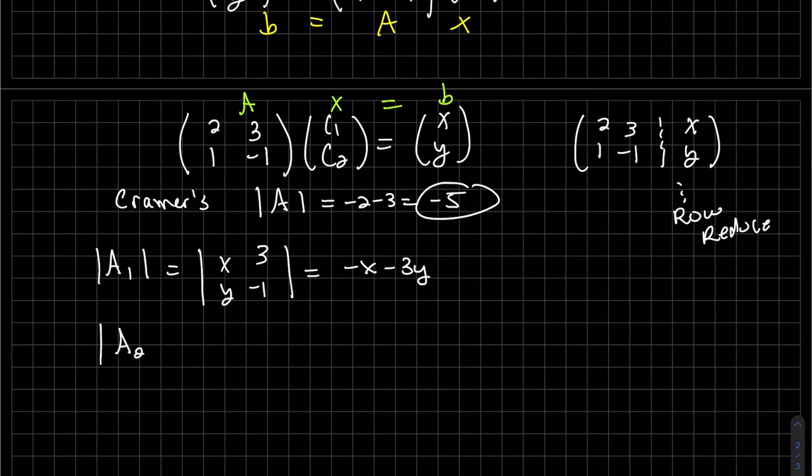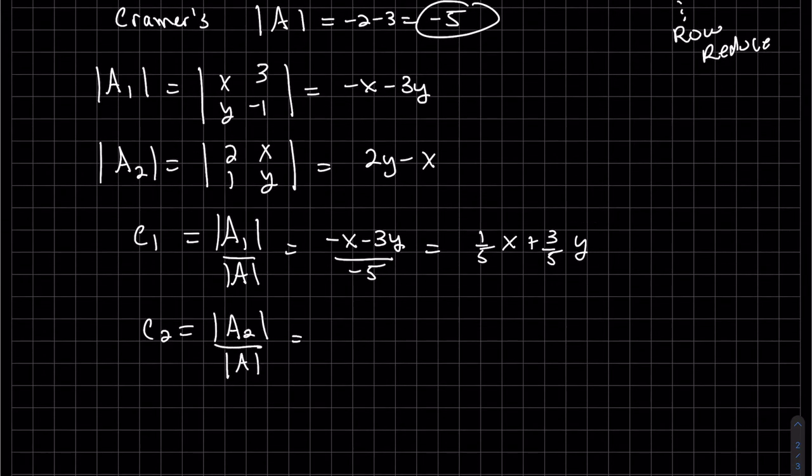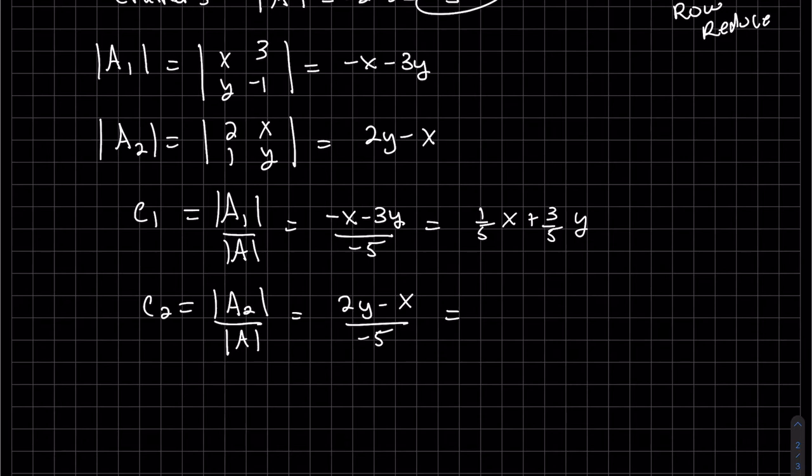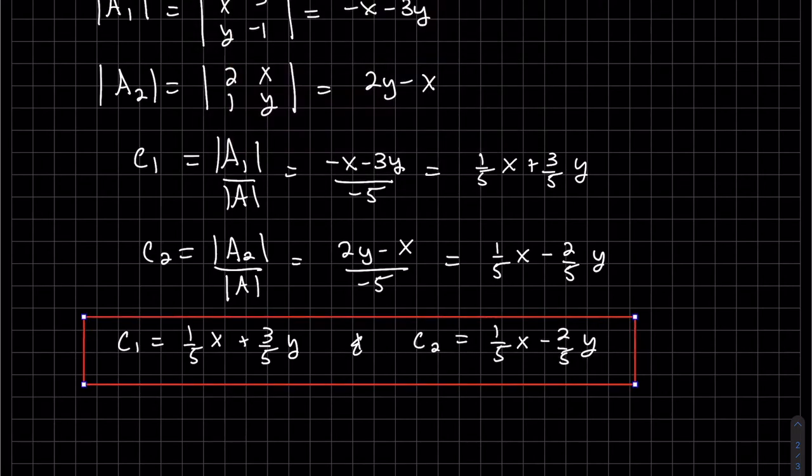So that's why I'm continuing. So C₁ is my first unknown. And I'm going to switch and put x first. So there's our solution. So the fact that we were able to solve for C₁ and C₂ in terms of x, I can give you any x and we can plug it into this formula to find our linear combination of that vector. So let's do an example.